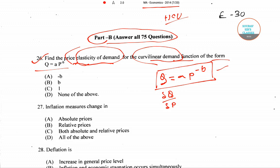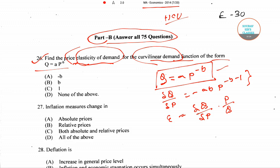Differentiating Q = A·P^(−B) with respect to P, the −B comes in front, giving us dQ/dP = −AB·P^(−B−1). Now, the price elasticity of demand is given by (dQ/dP)·(P/Q).